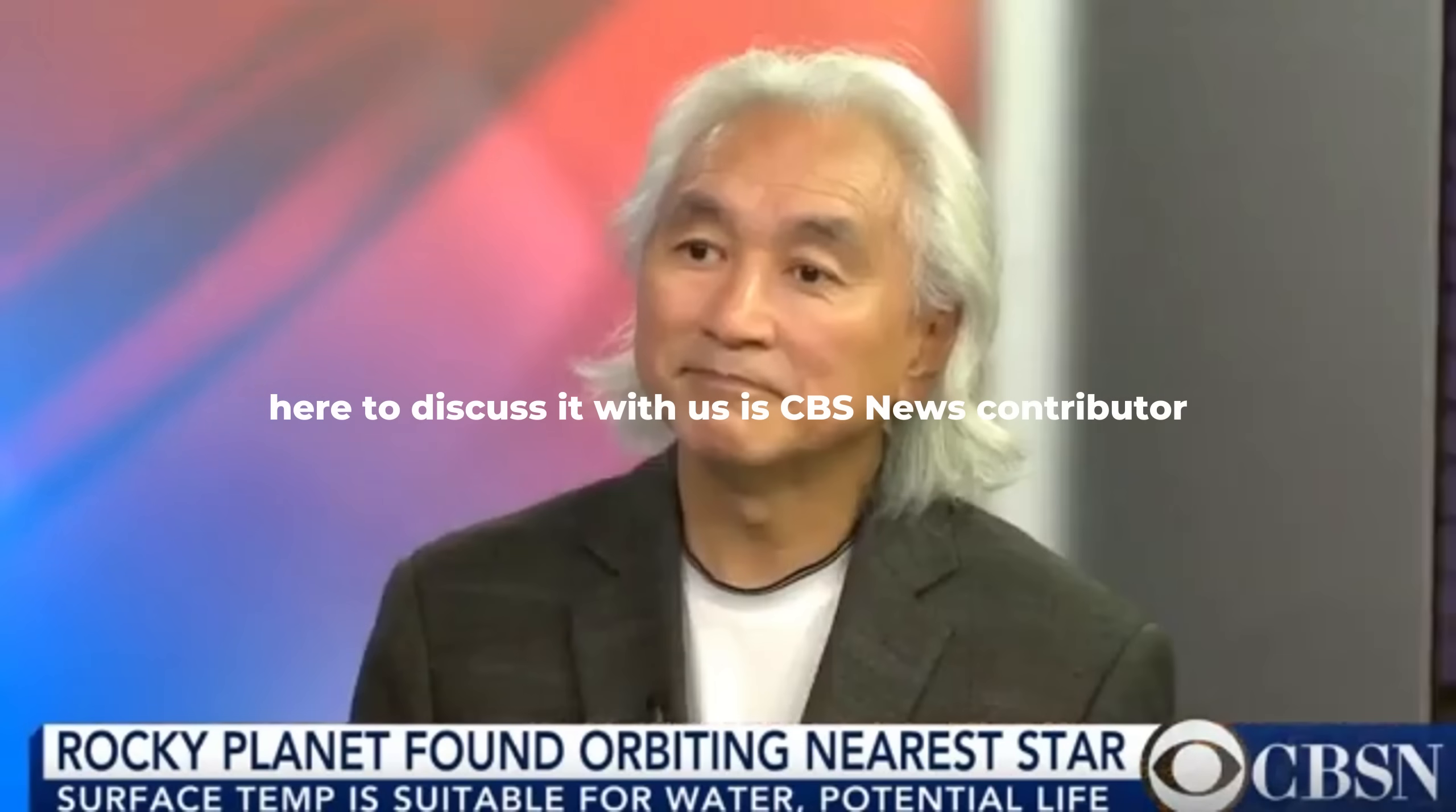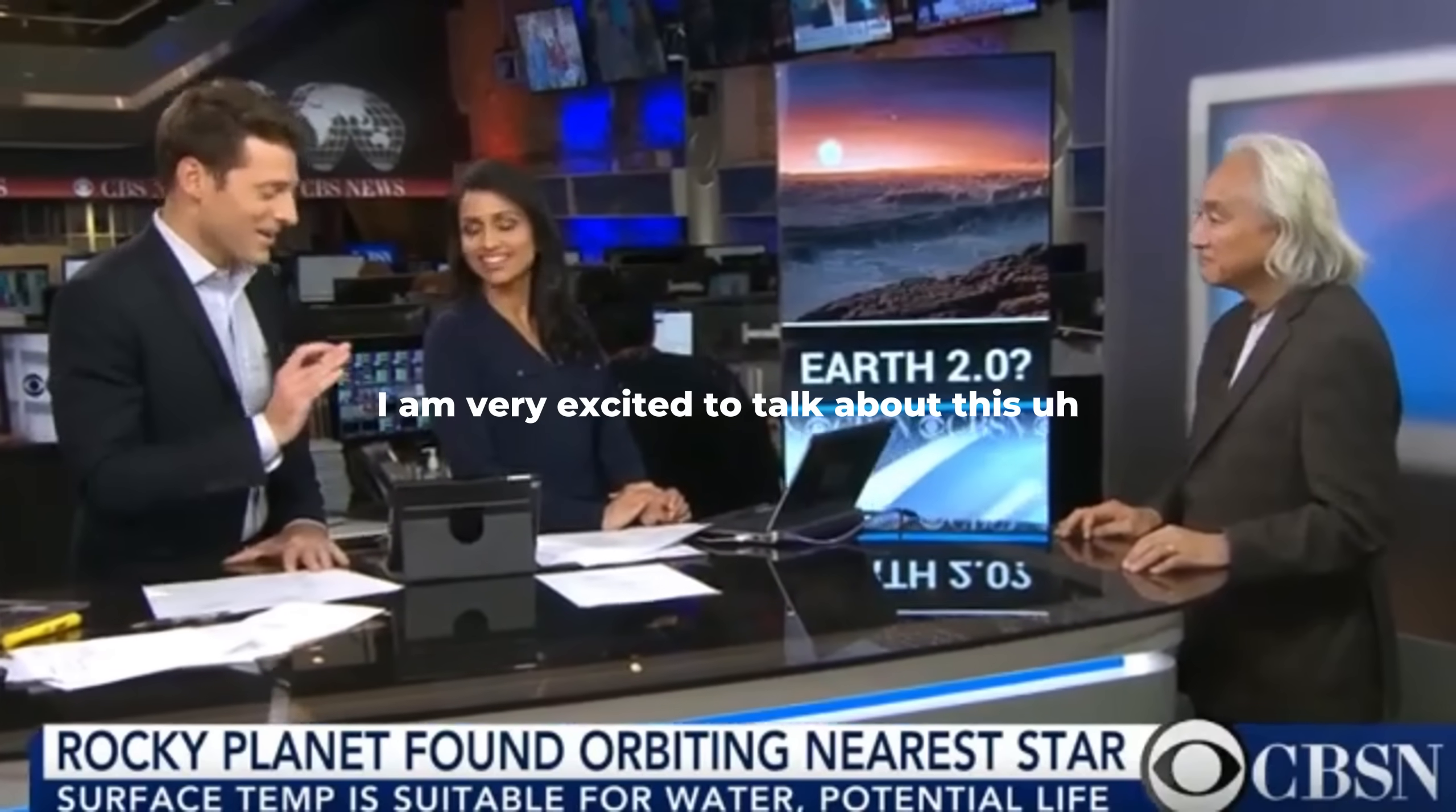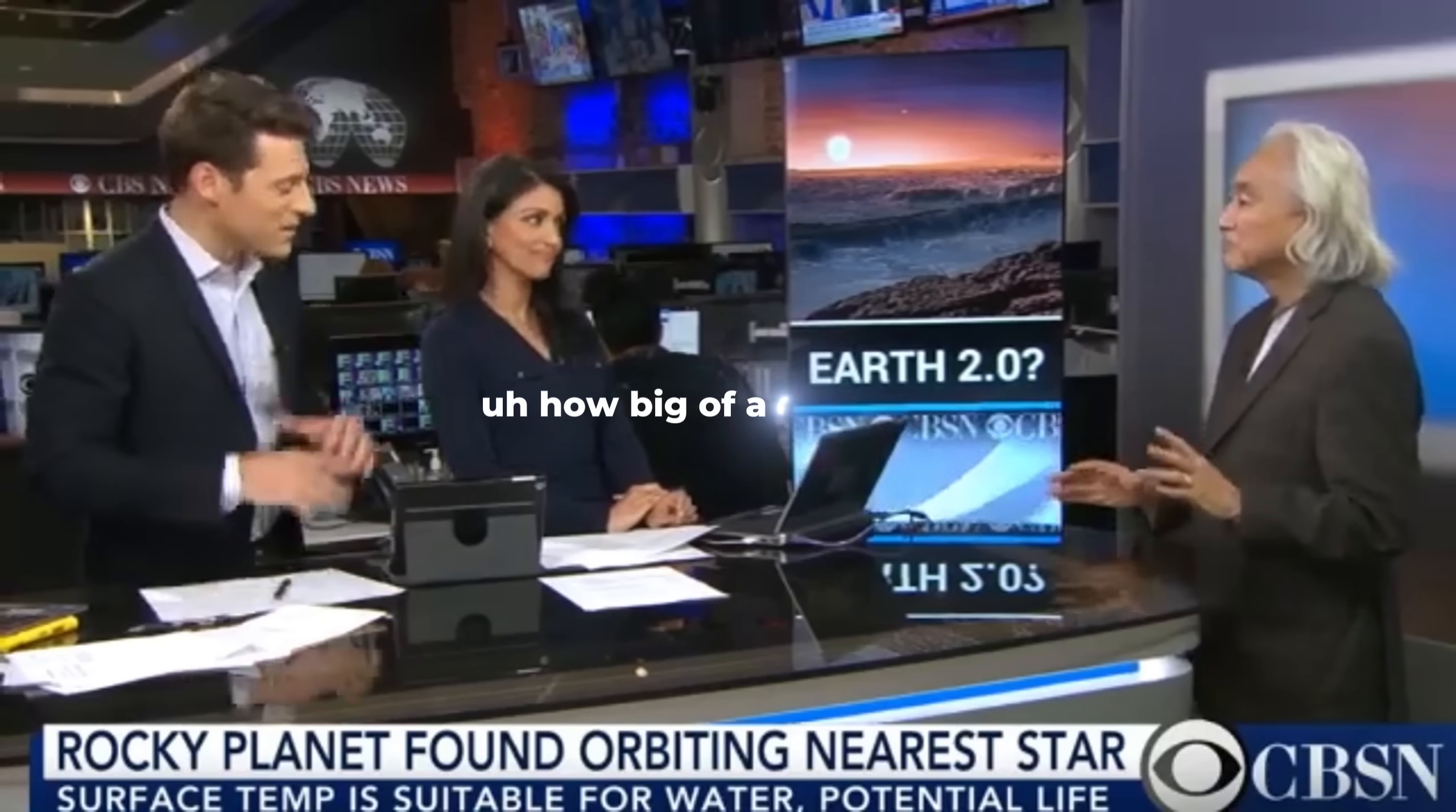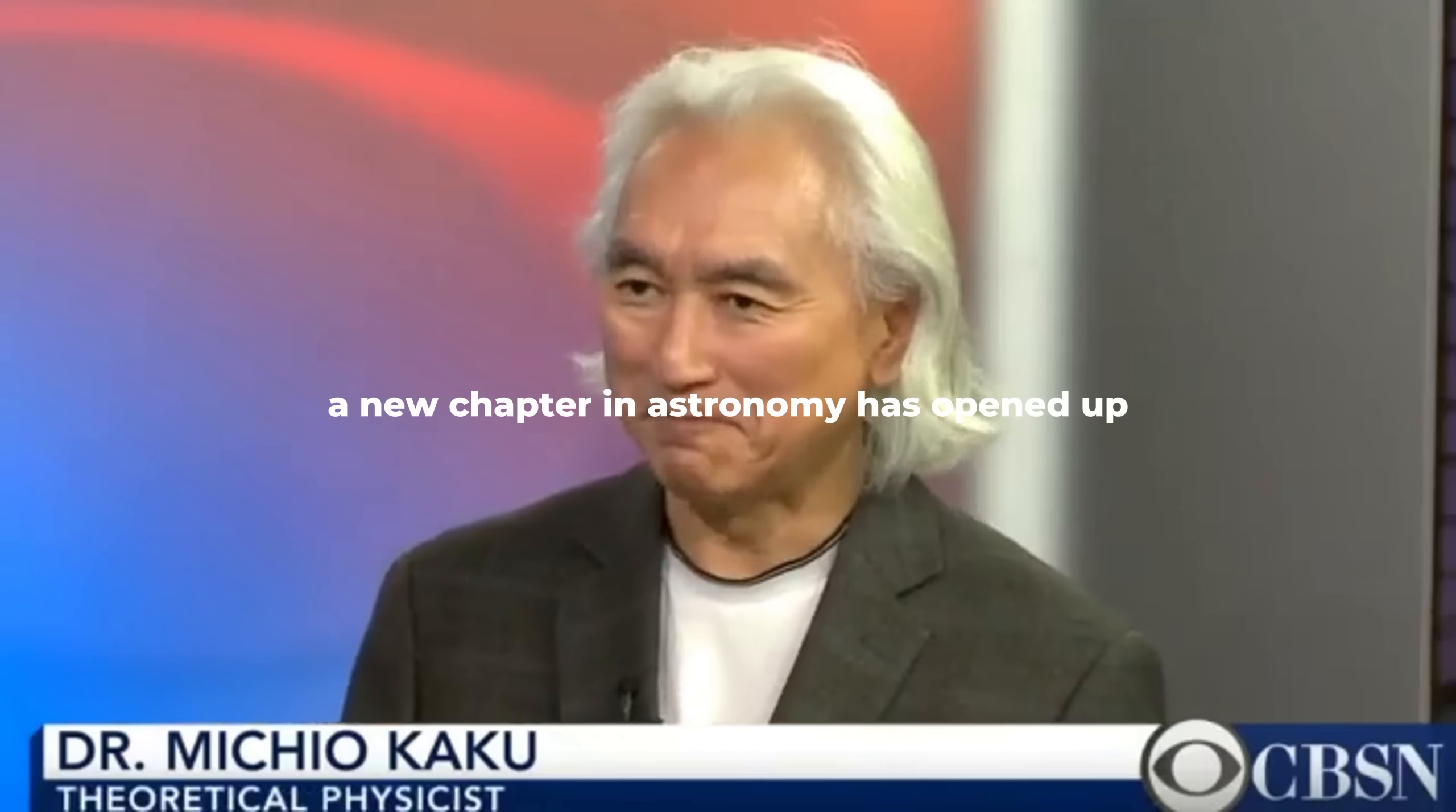Here to discuss it with us is CBS News contributor and theoretical physicist Michio Kaku. Dr. Kaku, I am very excited to talk about this. The discovery of an Earth-like planet a mere 4.2 million light years away. How big of a deal is this? This is a game changer because astronomers have hit the jackpot. This is their dream come true. A new chapter in astronomy has opened up.